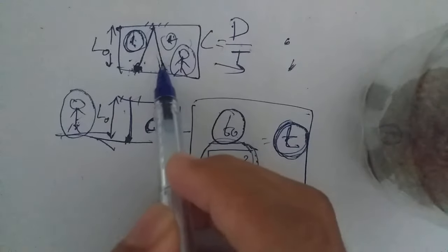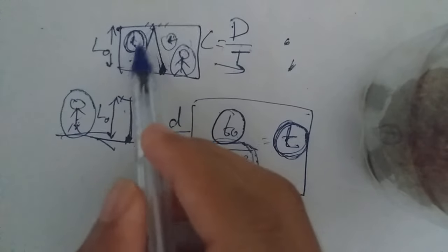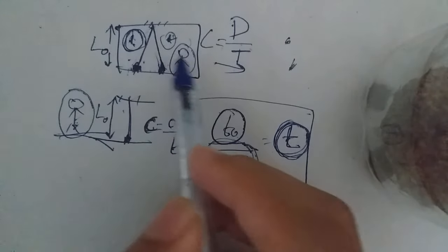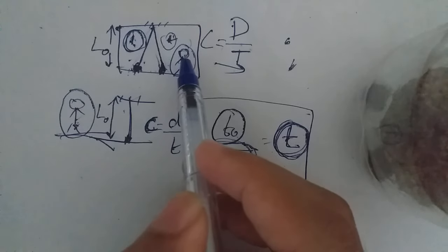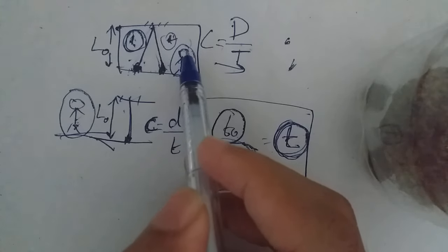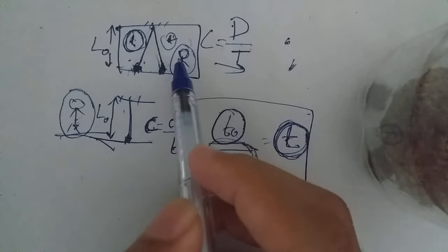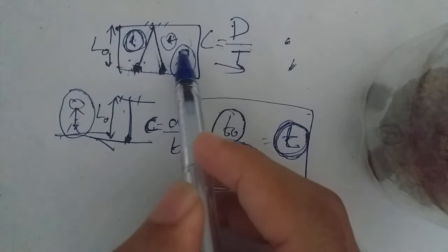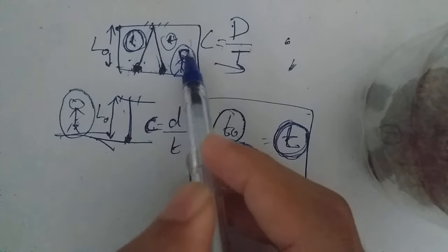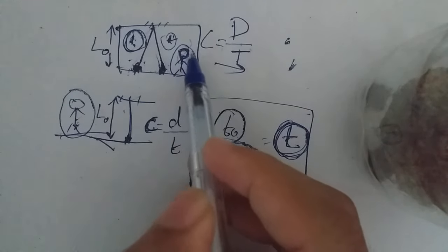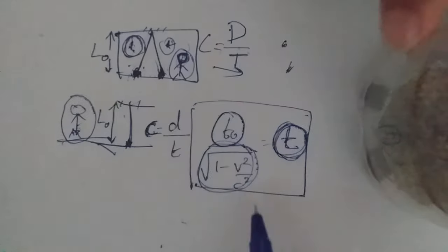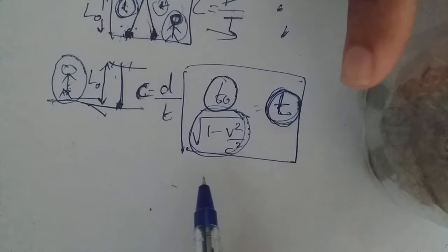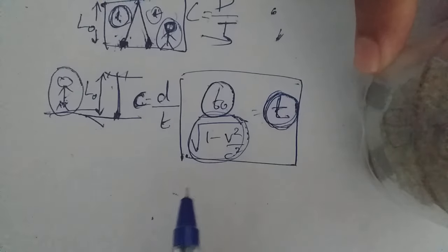If you don't get a problem, you can do it. We don't have an understanding of how much the problem is. But if you don't get a problem, it's slow. Okay, we have a simple hypotenuse theorem — we have derived it simply.